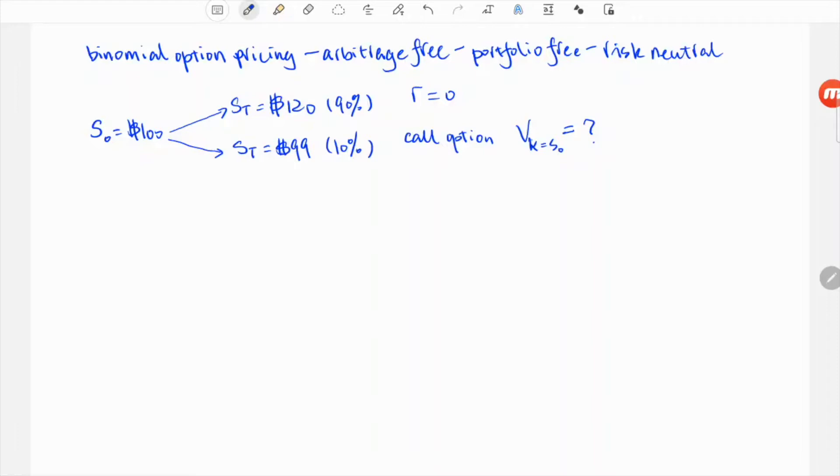First, think about the following problem. Given a stock with current price $100, at the time of maturity the stock can go to either $120 with 90% probability or $99 with 10% probability. Assuming risk-free rate is zero, how much would you pay for an at-the-money call option with strike of $100?